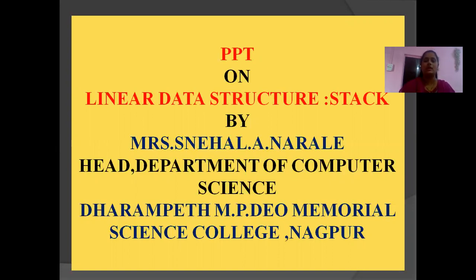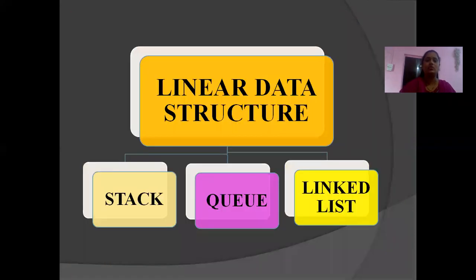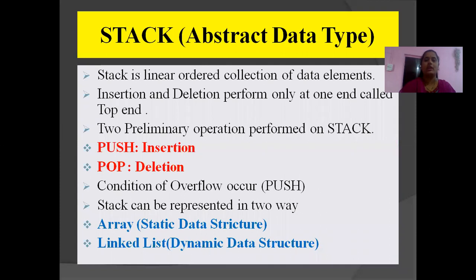In this video, we will see the details of linear data structure, like the Stack. There are three types of linear data structure: Stack, Queue, and linked list. So, what is a Stack? Stack is nothing but a linear order collection of data elements — meaning the elements which are stored in the memory are in a linear order or in a linear way.